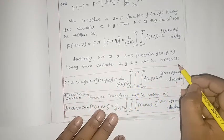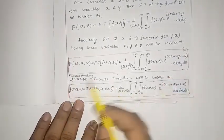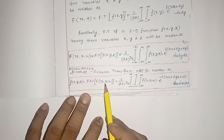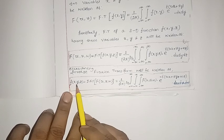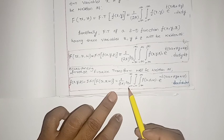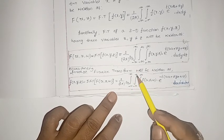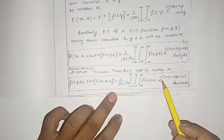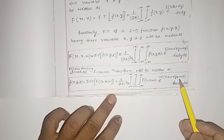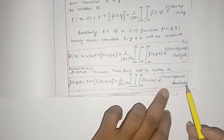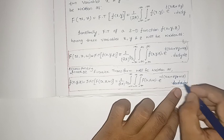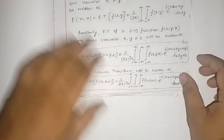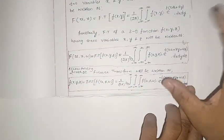The corresponding inverse Fourier transform — recovering the original function — gives small f(x, y, z) as the inverse Fourier transform of capital F(u, v, omega), equal to one by two pi to the power three by two, triple integral of capital F(u, v, omega) times e to the power minus i(ux + vy + omega z) du dv d omega.